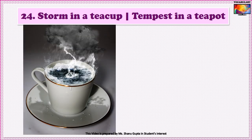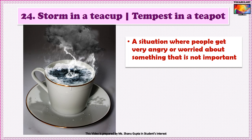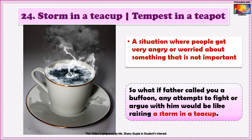The 24th idiom is A storm in a teacup. This is the British version — the American version is Tempest in a teapot, which means the same. You can yourself imagine how big a storm originating out of a small teacup or teapot can really become. So 'storm in a teacup' or 'tempest in a teapot' refers to a situation where people get very angry or worried about something that is not important at all. An example: So what if father called you a buffoon? Any attempts to fight or argue with him would be like raising a storm in a teacup.